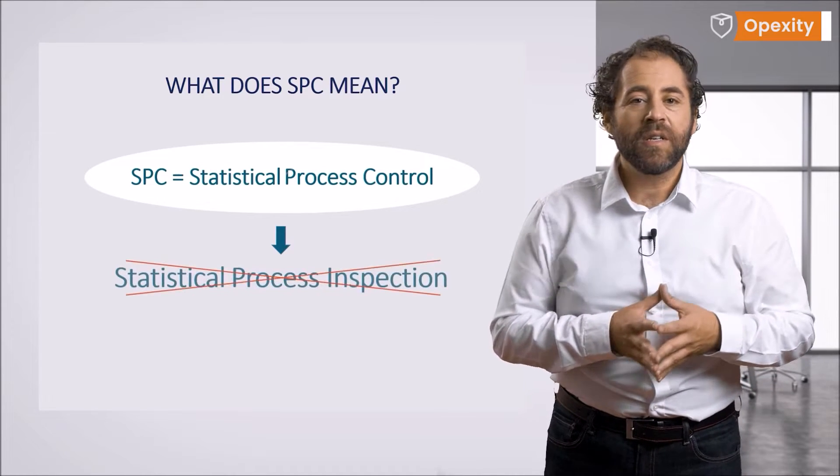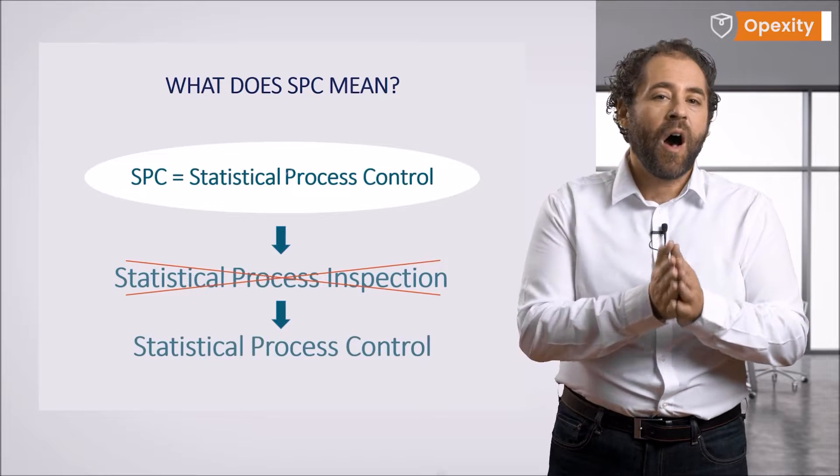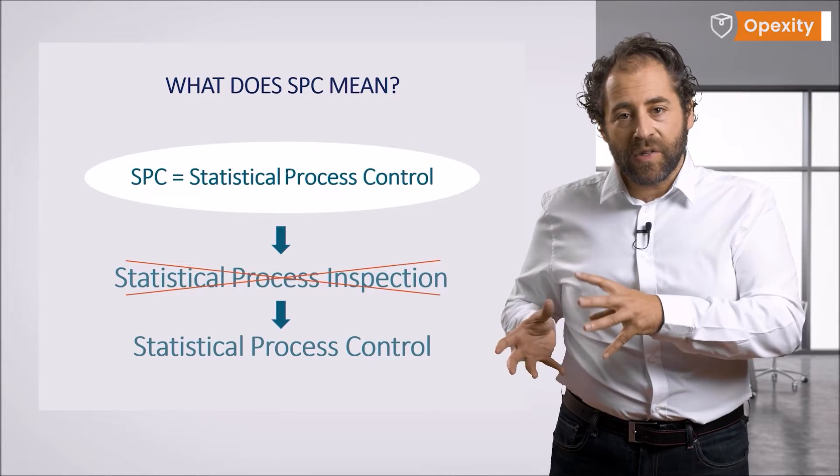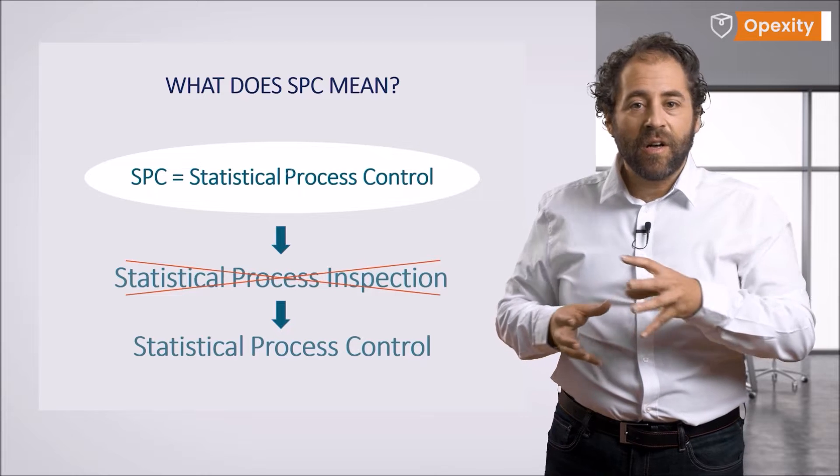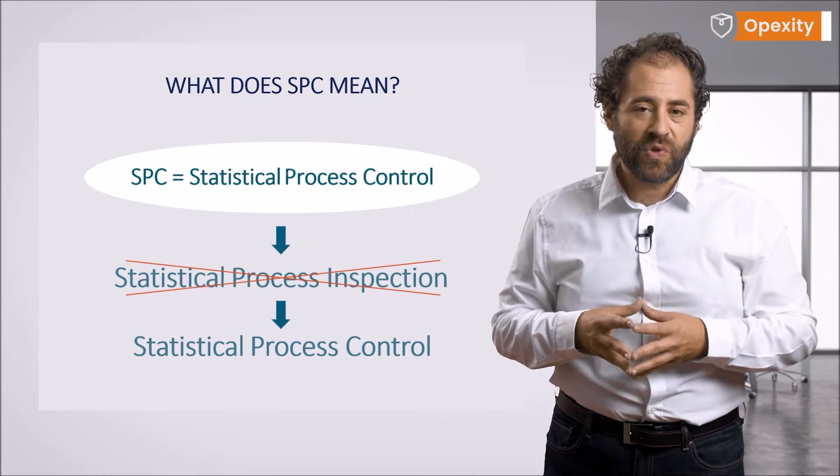SPC is a set of process optimization methods that is focused on continuous improvement and applies selected statistical tools to do so.